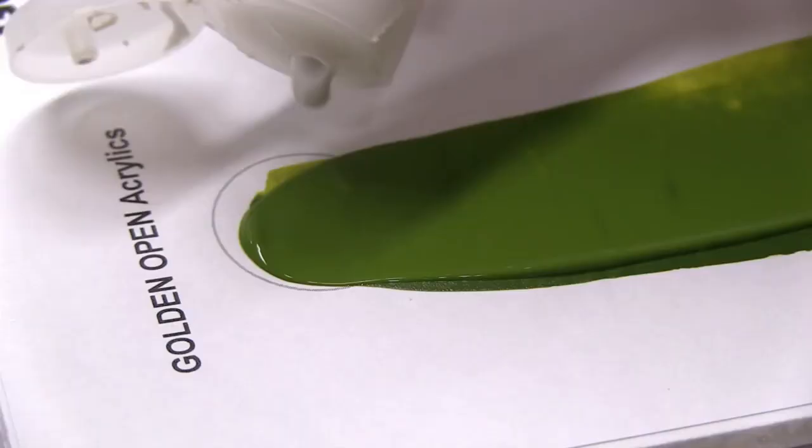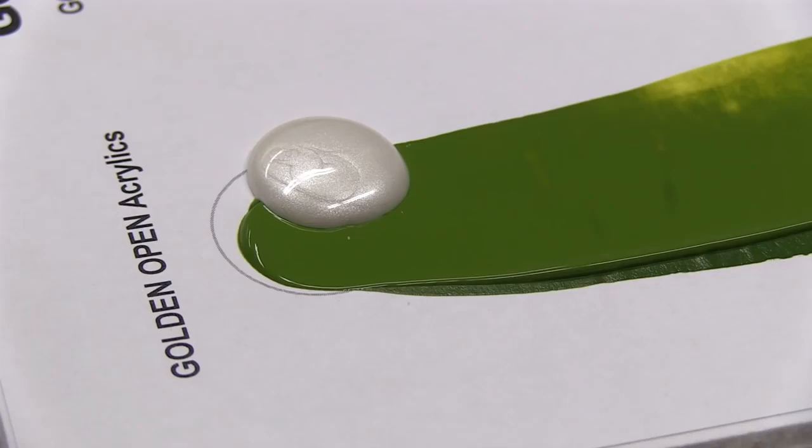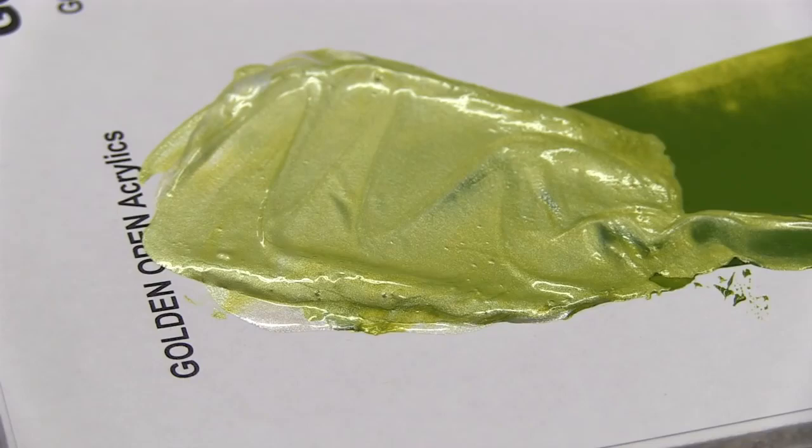Each color family also includes iridescent and interference colors. These are non-fading, non-tarnishing metallic finishes that can be mixed with standard colors to create a shimmering, lustrous, pearlescent effect.